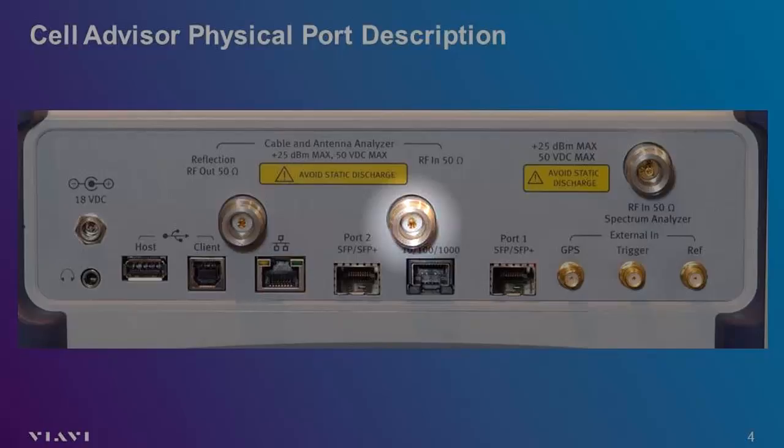When testing devices with extremely high gain, like a bidirectional amplifier with gain exceeding 60 dB, you can use the RF Spectrum Analyzer port in place of the Antenna Analyzer Input port. Using the Antenna Analyzer Input port to terminate a device under test will allow you to make vector measurements, which include amplitude and phase. If you are using the RF Spectrum Analyzer port to terminate a two-port measurement, you will only be able to measure amplitude. This is referred to as a scalar measurement.